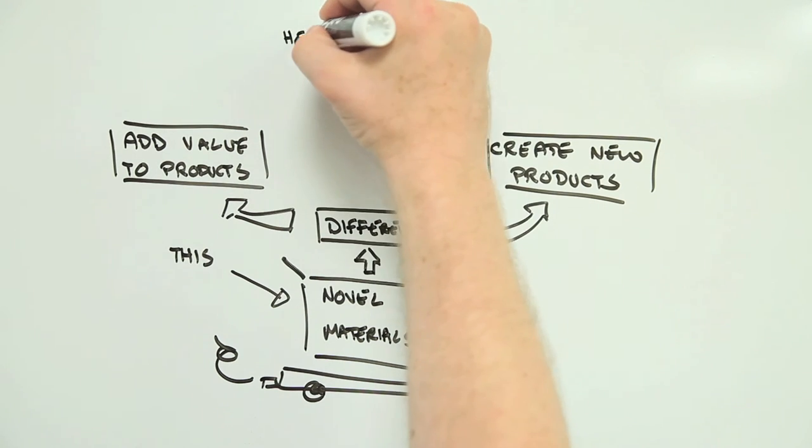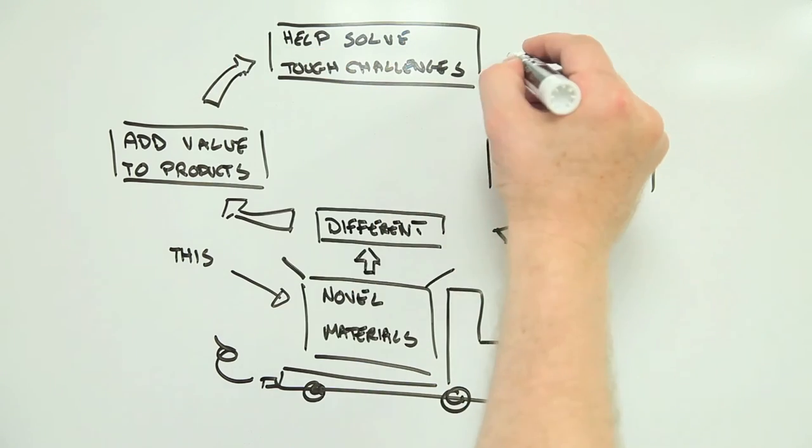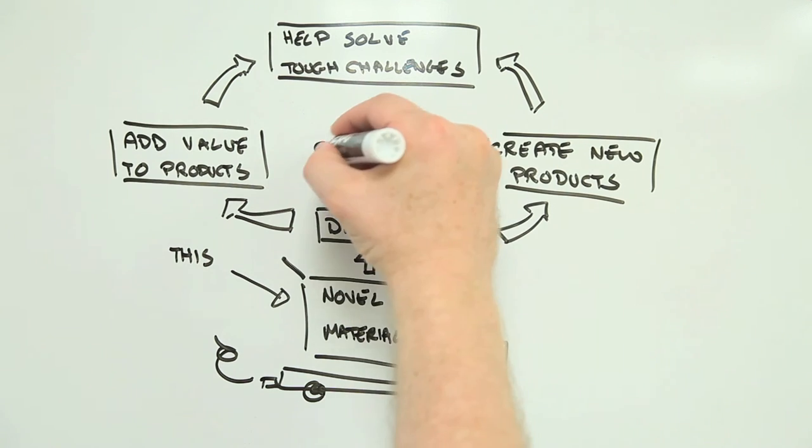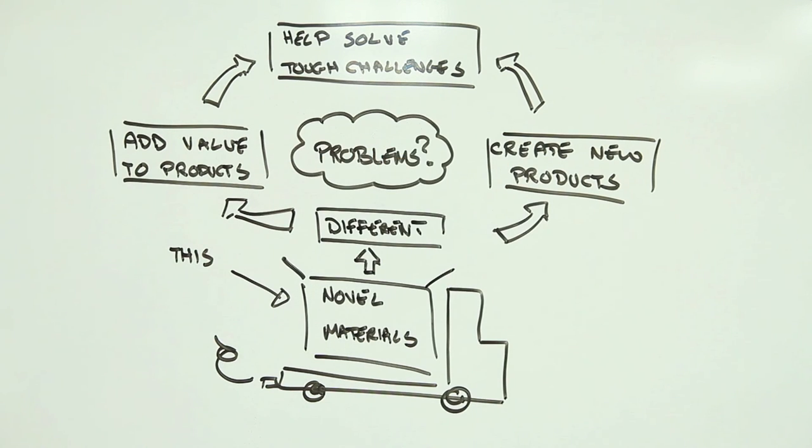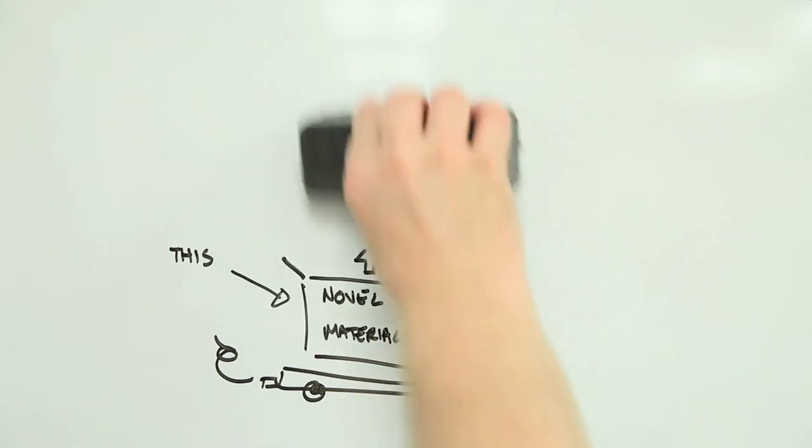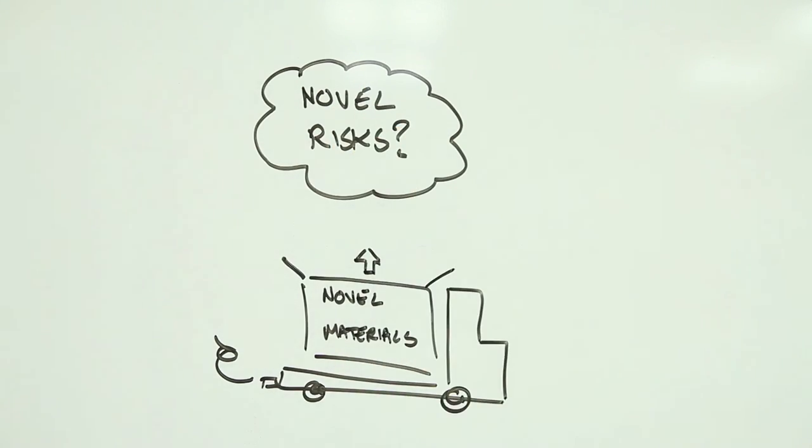But novel materials can also help find solutions to some really stubborn challenges, like ensuring everyone has enough food and water and energy, for instance. This is fantastic, as long as your fancy new material doesn't create more problems than it solves. And here's the rub. How do we know that these novel materials don't come pre-packaged with novel risks?